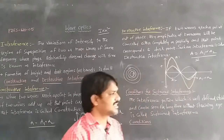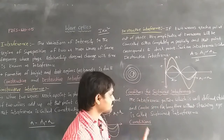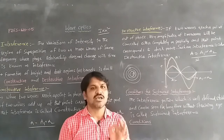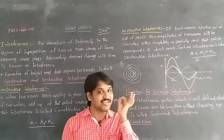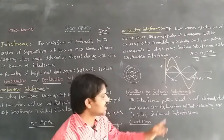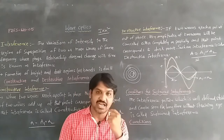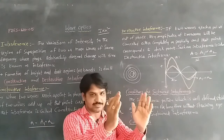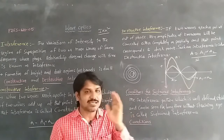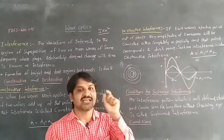Sustained interference: what is meant by sustained interference? The interference pattern which is stable and well-defined, which can be seen for a long time without straining our eye whenever we see the interference when two lights are superimposed on another — if we can see that for a long time without straining our eye, that is called sustained interference.